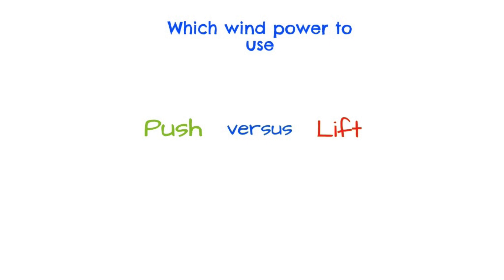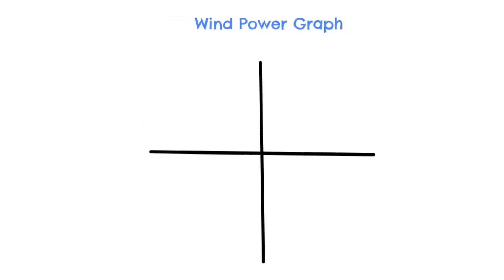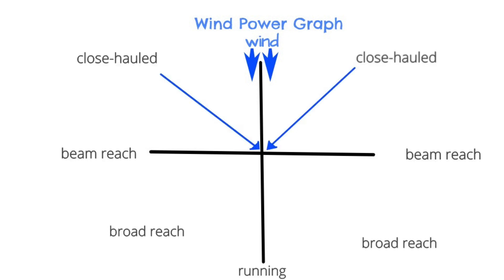So which of the two wind powers, push versus lift, do we use when? Let's prepare a wind power graph with the wind coming from the top of the graph. Now let's add our points of sail: close hauled, beam reach, broad reach, running, and at the top we'll mark the no-sail zone.